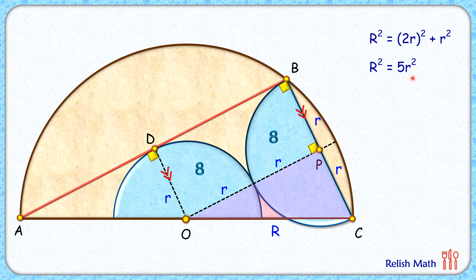Otherwise, if we multiply both sides by π/2, we'll get (πR²)/2 = 5 times (πr²)/2. Now here, this (πr²)/2, that's the area of this blue semicircle.